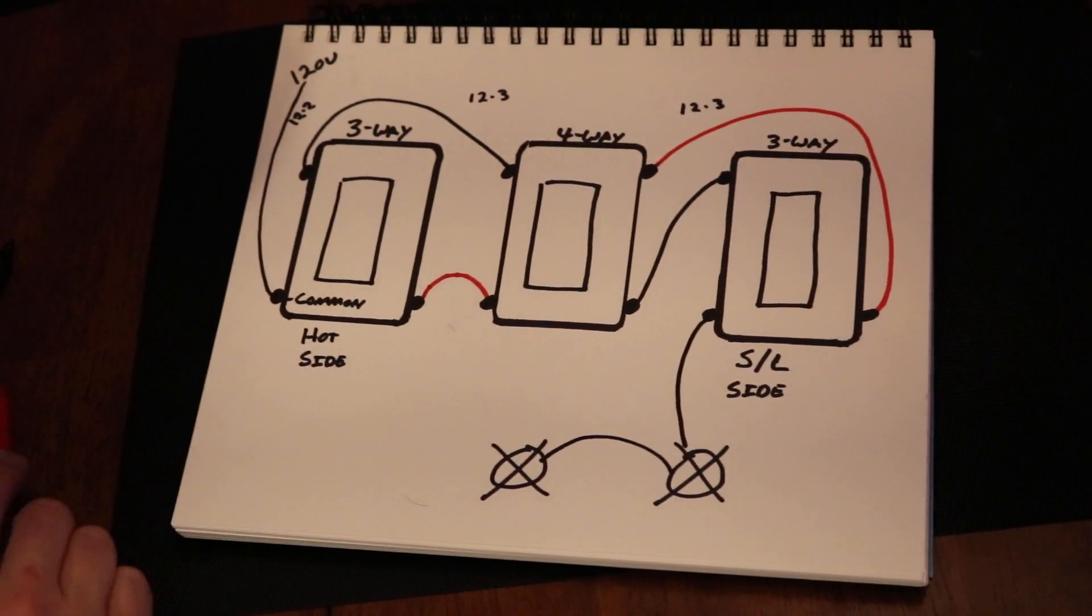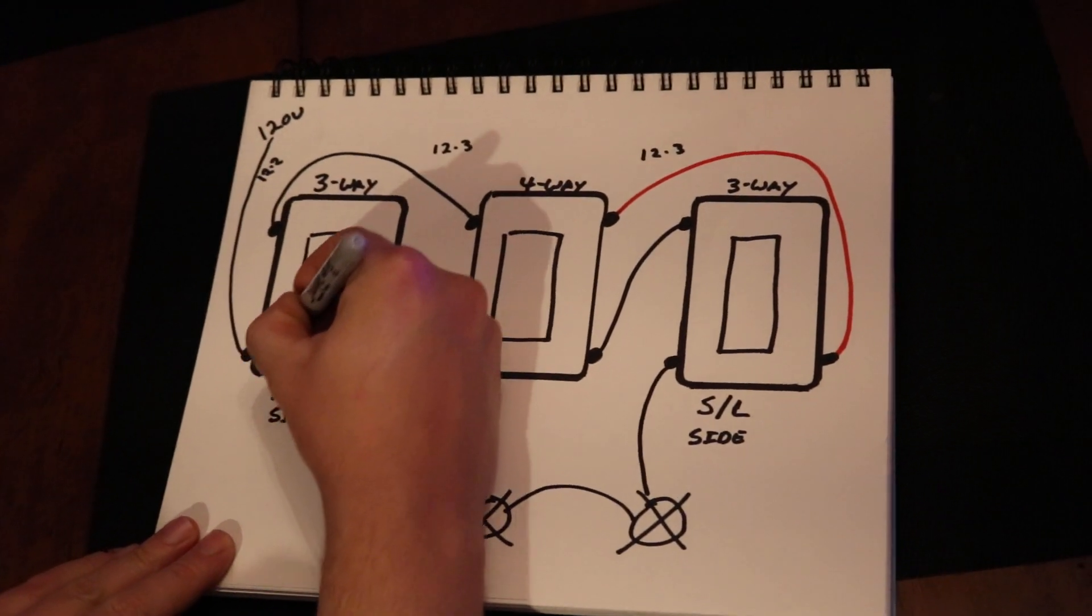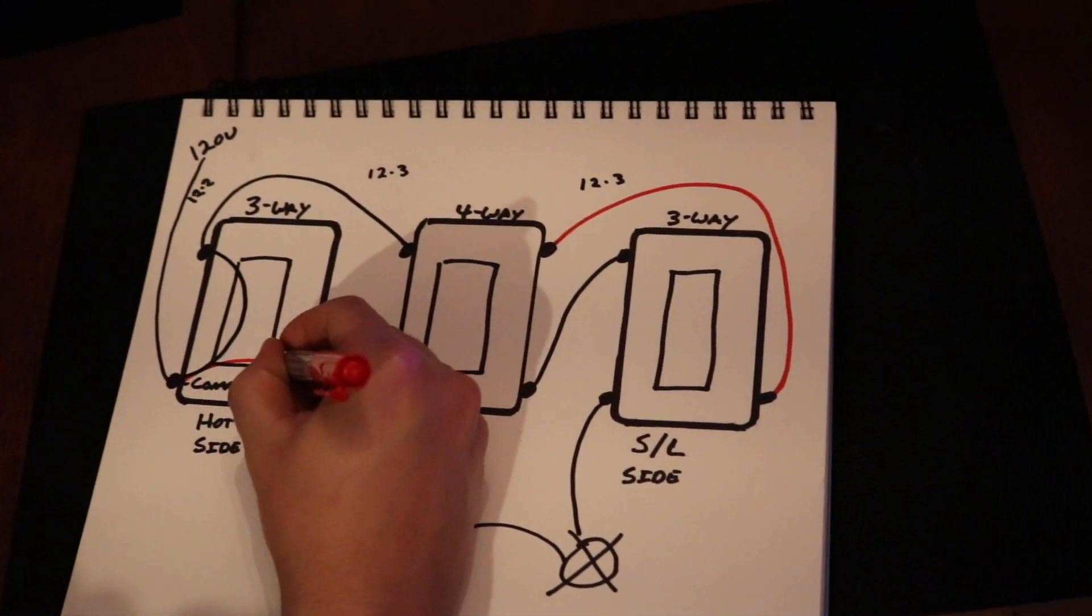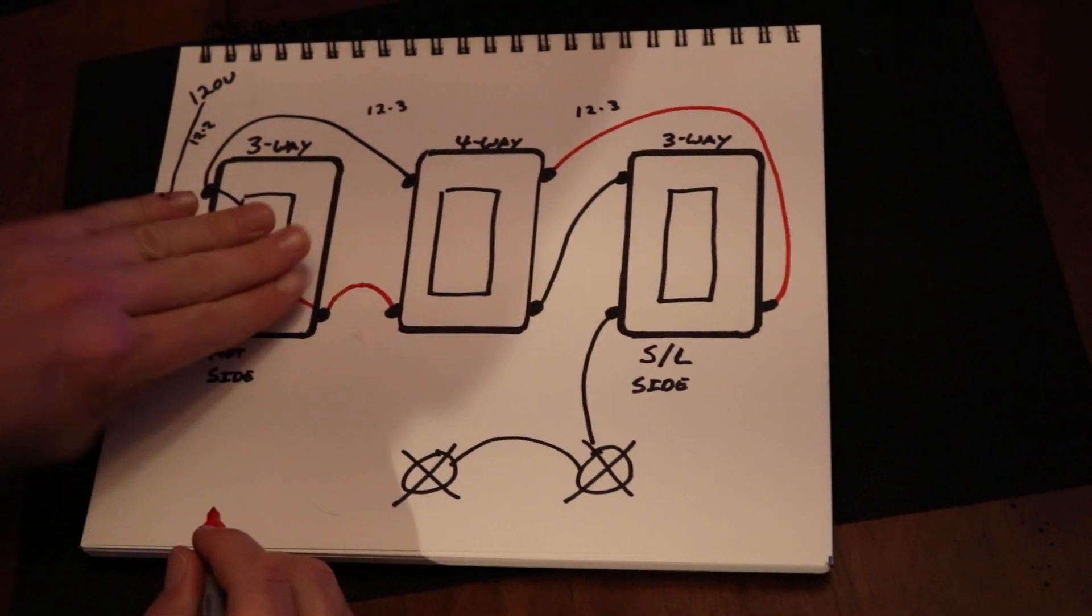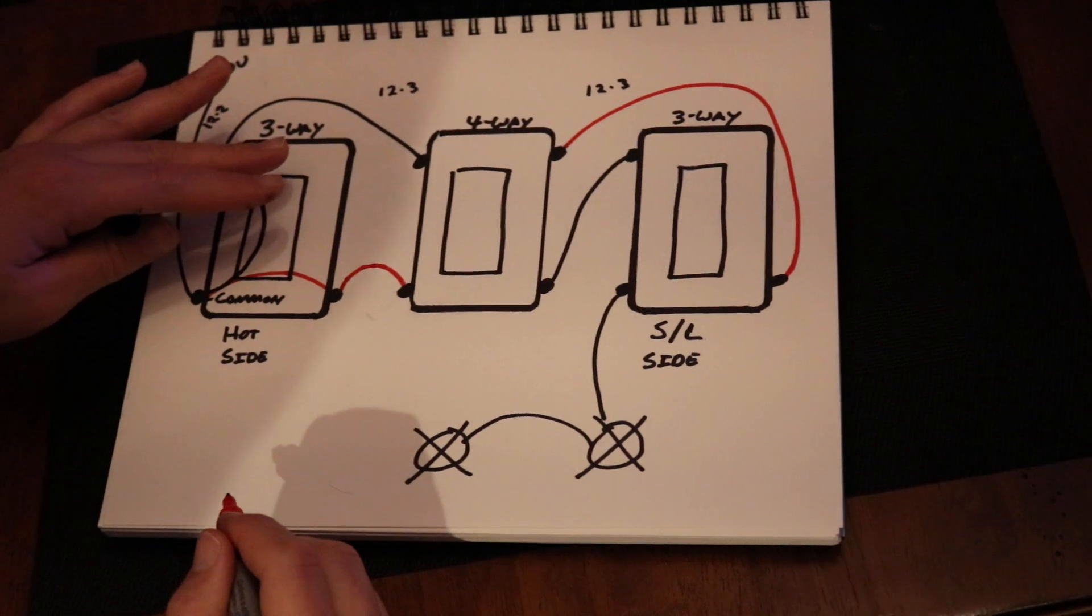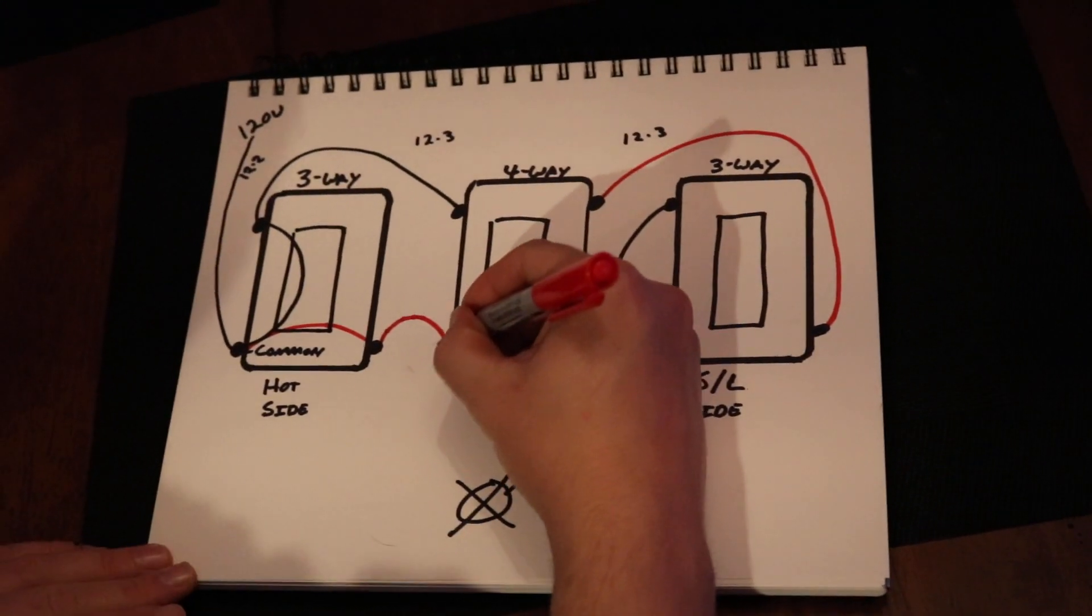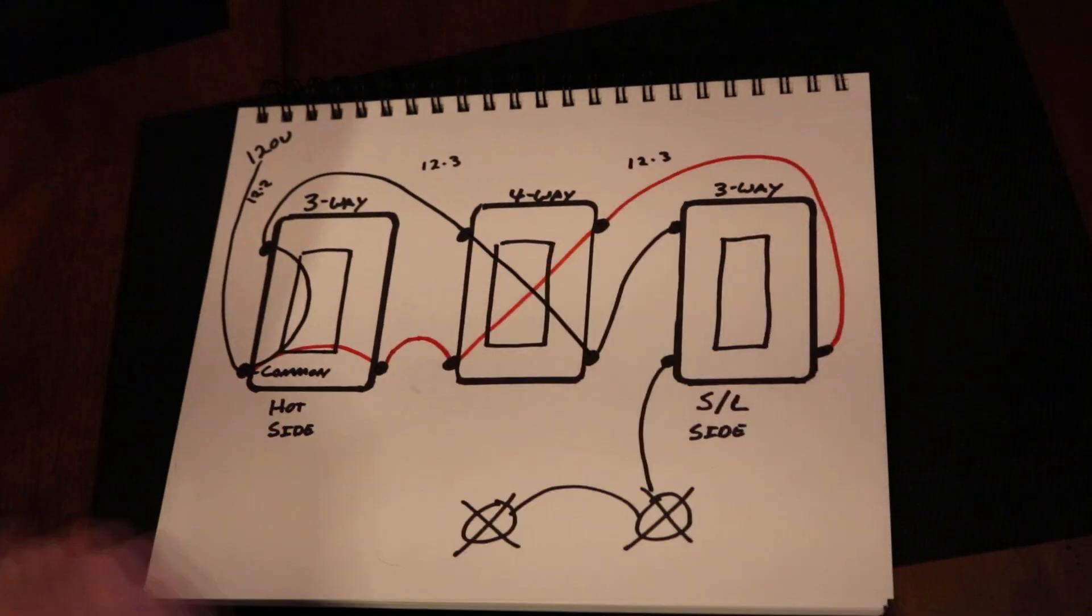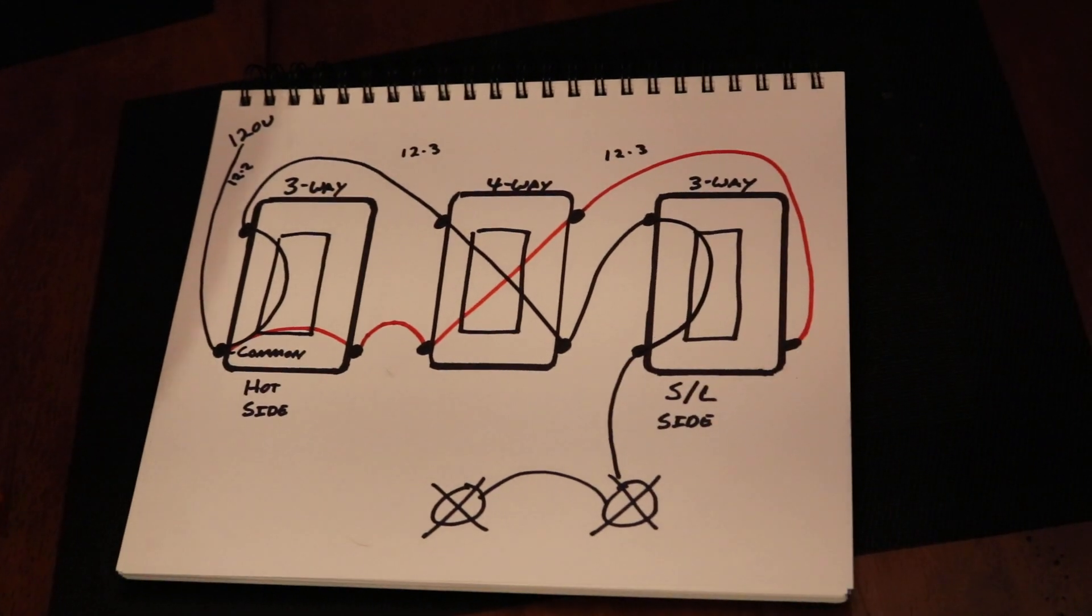What you end up with is the mechanics of it is something like this. I'm going to do my best to explain this. It is a little bit complicated. This is your incoming power. It's going to send voltage to one of these legs, depending on if this is in the up or down position. When you have your three-ways and four-way switches, you don't have an on and off like a normal switch. You have an up and down.